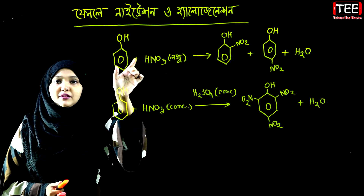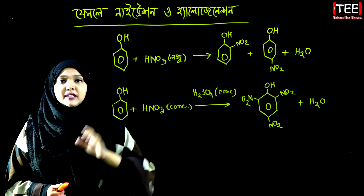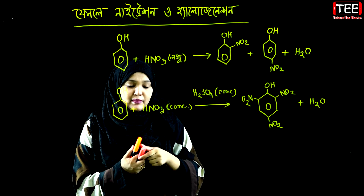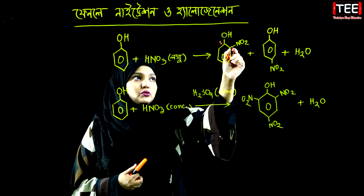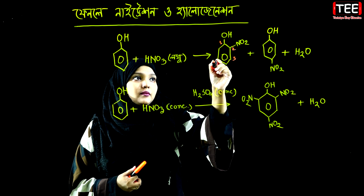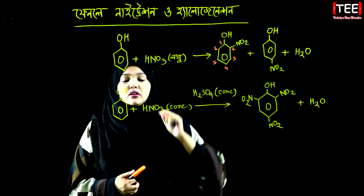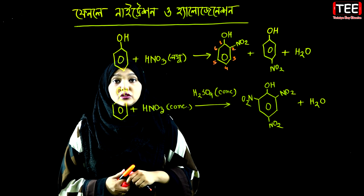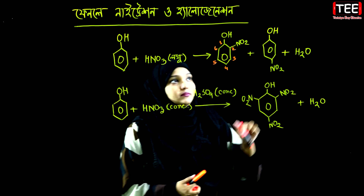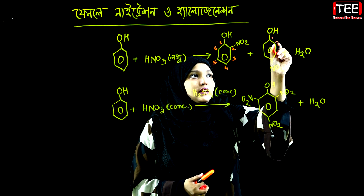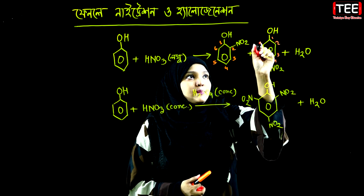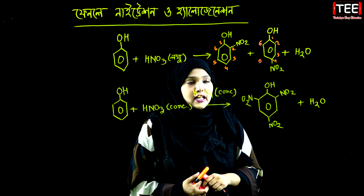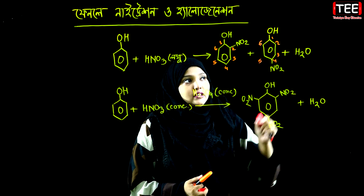First of all, phenol reacts with dilute nitric acid. It is ortho-nitrophenol. We have the carbon numbering: here we have one, two, three, four, five, six. The second product is ortho-nitrophenol, and then we have 4-nitrophenol.